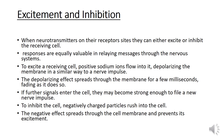Now we will discuss about excitation and inhibition. When neurotransmitters bind to their receptor sites, they can either excite or inhibit the receiving cell. Responses are equally valuable in relaying messages through the nervous system. To excite a receiving cell, positive sodium ions flow into it, depolarizing the membrane in a similar way to a nerve impulse. The depolarizing effect spreads through the membrane for a few milliseconds, fading as it does so.